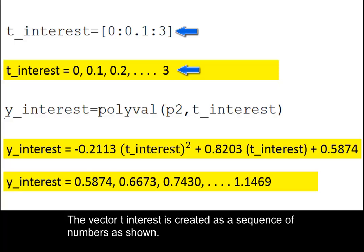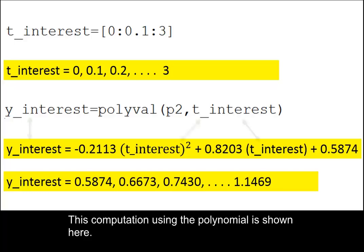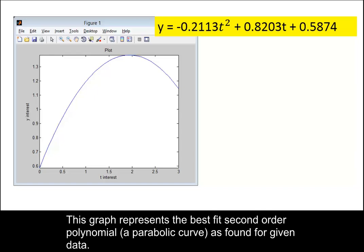The vector t interest is created as a sequence of numbers as shown. The polynomial p2 is evaluated over all the values in t interest to produce the output y interest as shown. This computation using the polynomial is shown here. This graph represents the best fit second order polynomial, a parabolic curve as found for the given data.